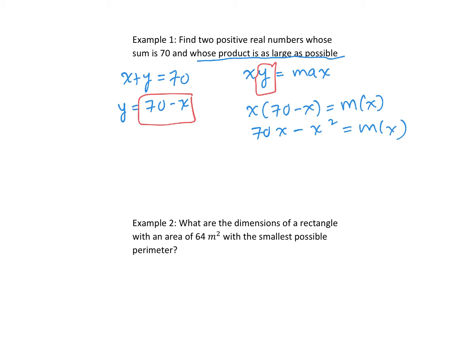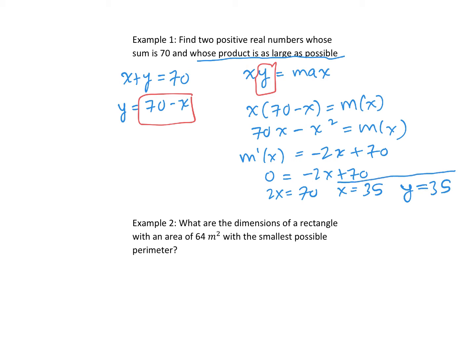That's our function representing the product of the two numbers. To find the maximum, we take the derivative: M'(x) = negative 2x plus 70. Setting it equal to zero and solving gives x equals 35. Substituting back, y equals 70 minus 35, so y equals 35. Checking with the second derivative gives negative 2, which is always negative, confirming it is a maximum.